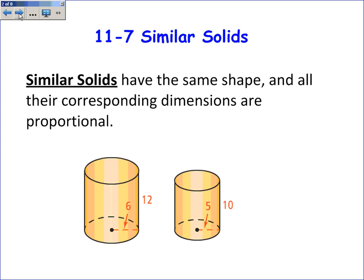Similar solids are very much like similar polygons, except they're solids and not polygons. So they have the same shape, meaning they're both cylinders, or they're both pentagonal prisms, or they're the same shape, and all the corresponding parts, all the corresponding dimensions are proportional. These two cylinders are similar because they're both cylinders, and because their corresponding dimensions are proportional.